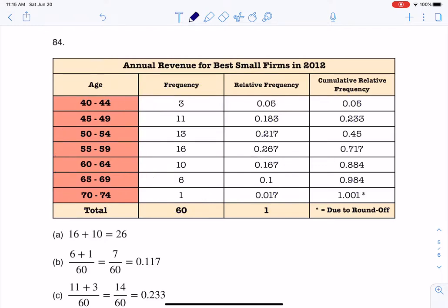The first thing I did was find out how many CEOs we had. They said in the problem that you were going to look at the first 60 ranked firms, but I just went ahead and added all of these numbers up because this should always total out to your sample size. I always think it's a good check to make sure that was totaling out to 60.